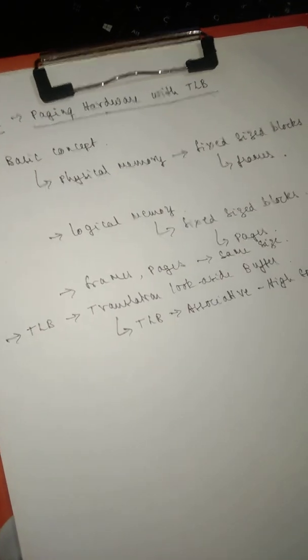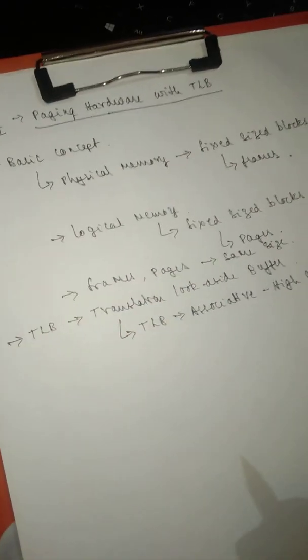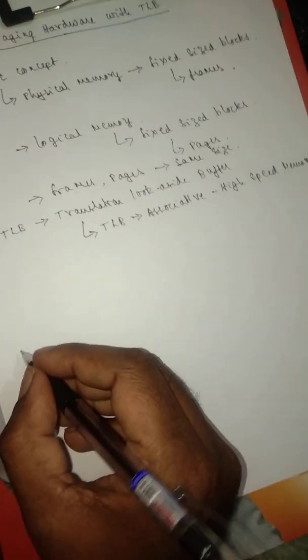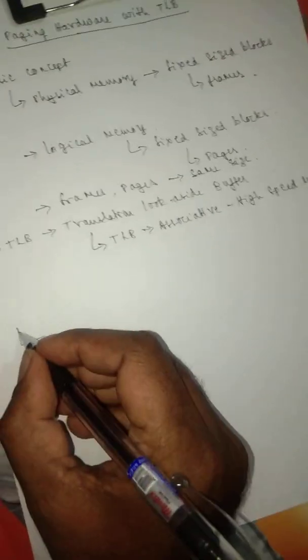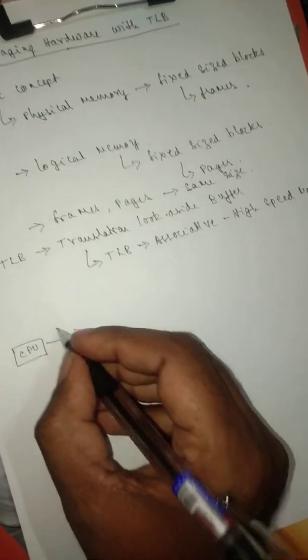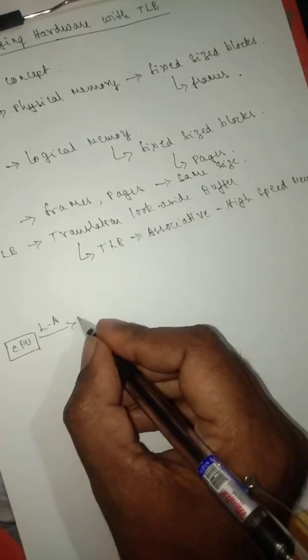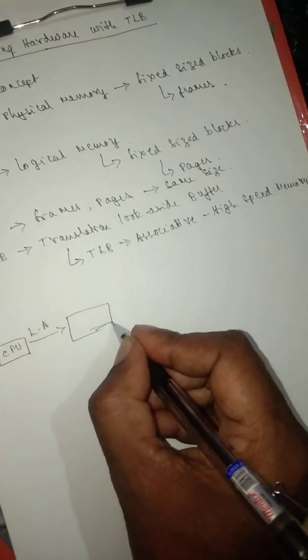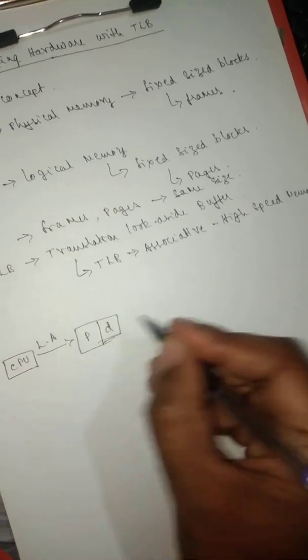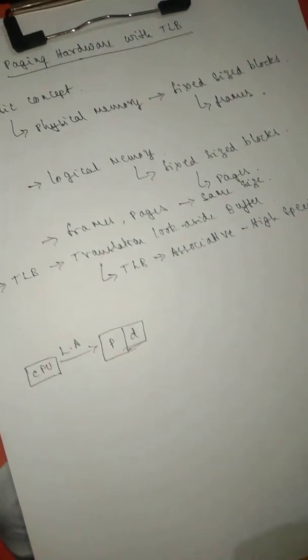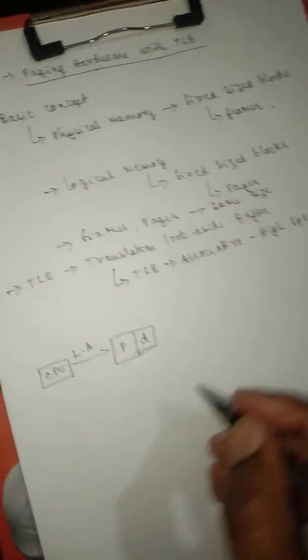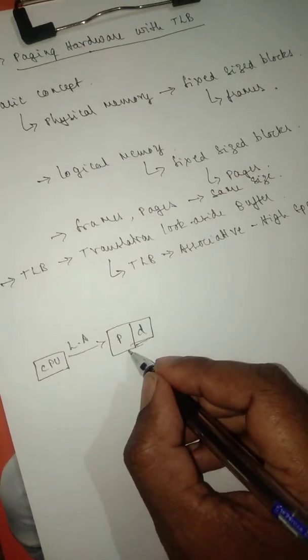The working of paging hardware with TLB is as follows: CPU generates a logical address, which is a combination of two things. The first one is the page number P, and the second one is D, the displacement or offset.